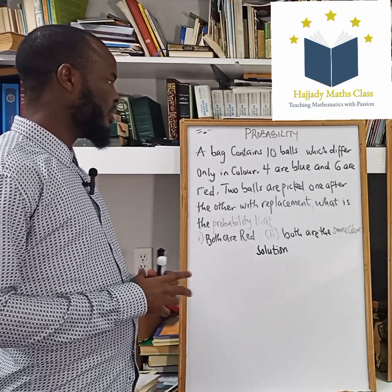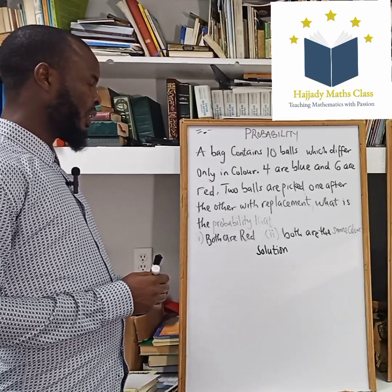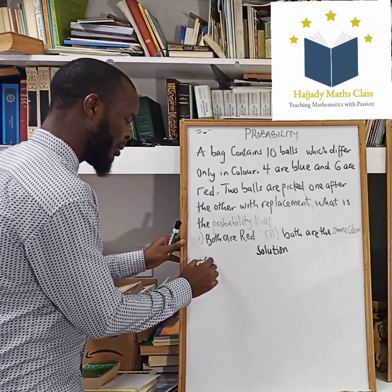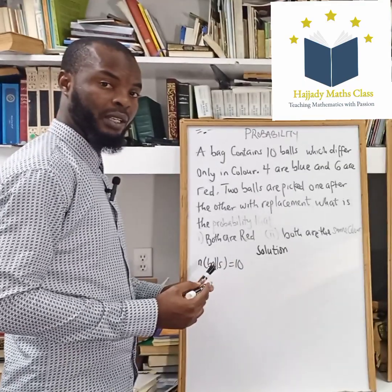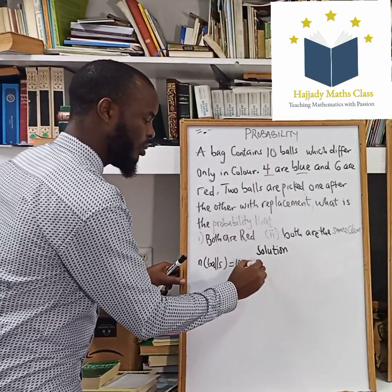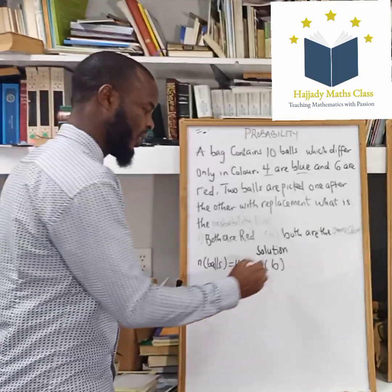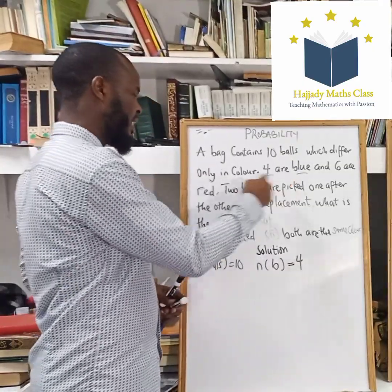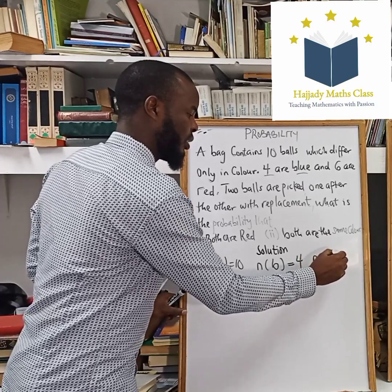It says that a bag contains 10 balls, which differ only in color. We have four blue and six are red. That is, the total number of balls, which is our sample space, is 10. Number of blue balls — let's let B represent blue — the number of blue balls is four. And six are red; the number of red balls is six.